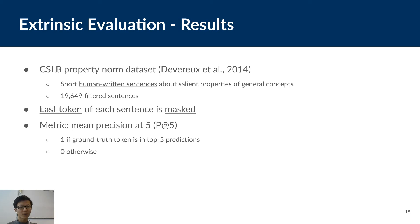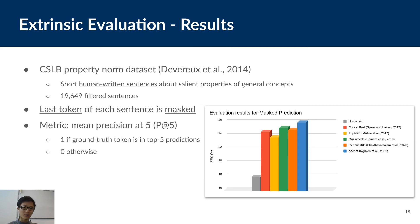And the dataset we use for this evaluation is the CSLB property norm dataset. It contains short human written sentences about salient properties and traits of general concepts. And after some filtering, we got about 19,000 sentences. We hide the last token of each sentence. These tokens are usually the objects of the sentences. And in terms of metric, we use the mean precision at 5 metric.